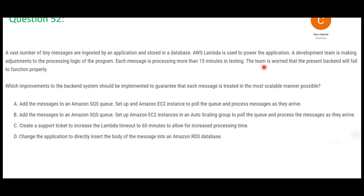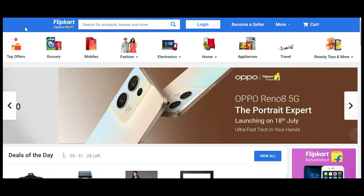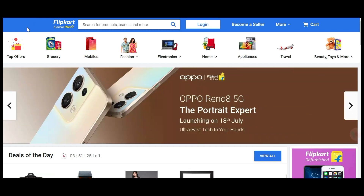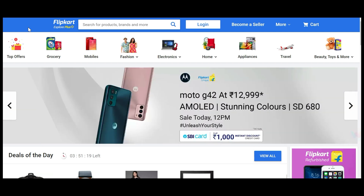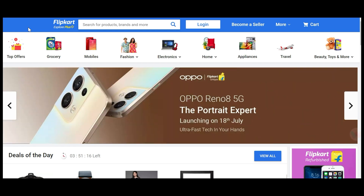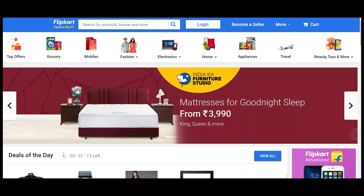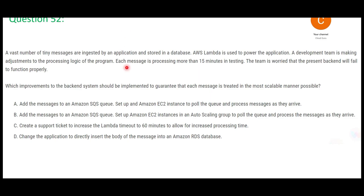The team is worried that the database might fail. They want to improve the backend system so that each message is treated in the most scalable manner. If you are shopping using this website, you put an order and the order execution is taking a lot of time — you are not getting a transaction number. That is a dissatisfaction to you as a user, as a customer. So we want to improve that experience. There are four options to improve. Which one is the right answer?